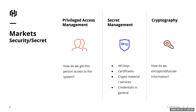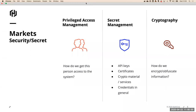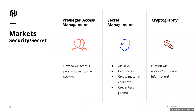When we went to market to find a secure solution, we realized that the market had two clear product sets: a privilege access management category focused on how to get a person access to a system — very driven toward human consumers — and on the other end, cryptography hardware focused on encryption. We found ourselves in a middle whitespace where there wasn't really a secret management solution that did what we needed: not only storing secrets, but also generating them and handling a zero-touch workflow to consume secrets and store cryptographic material.